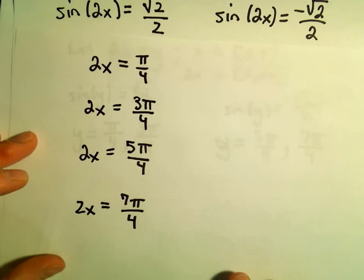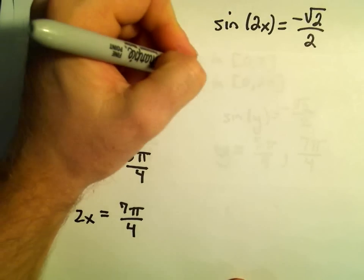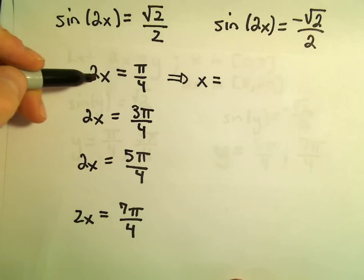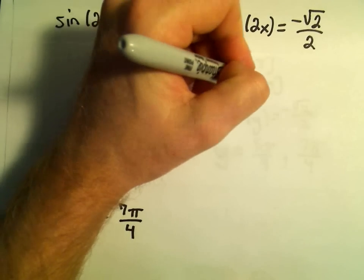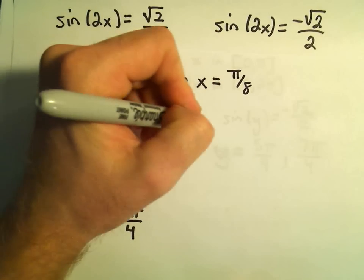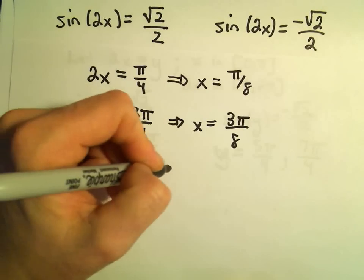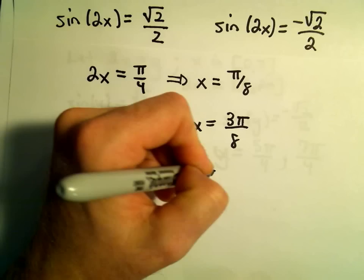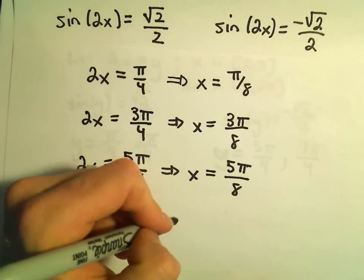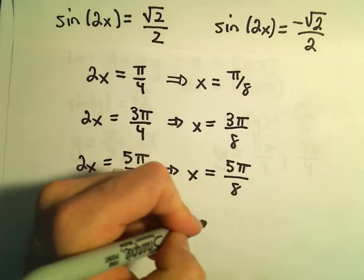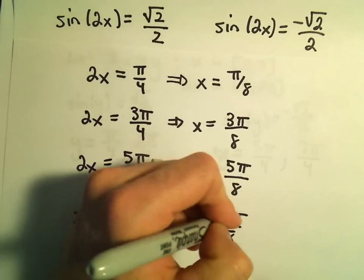In all cases, we simply multiply both sides by one half. So x equals π over 8, x equals 3π over 8, x equals 5π over 8, and our last solution is x equals 7π over 8.